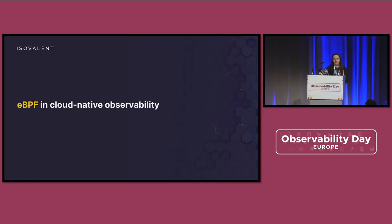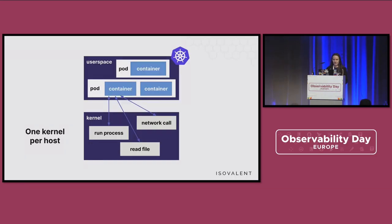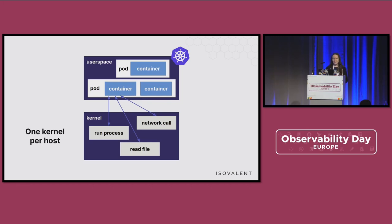So why is eBPF useful for observability, especially in the cloud-native space? Here at KubeCon, we run things in Kubernetes. In Kubernetes, we have many applications running on the same node. They are scheduled by Kubernetes, and as a developer, we don't really need to care which machine the application is running on — it's just scheduled and rescheduled by Kubernetes.